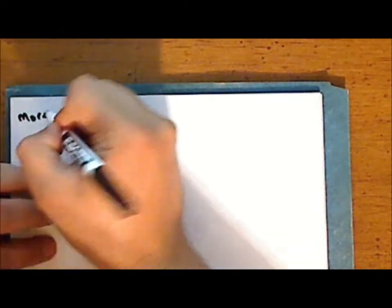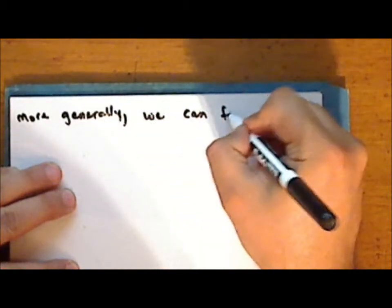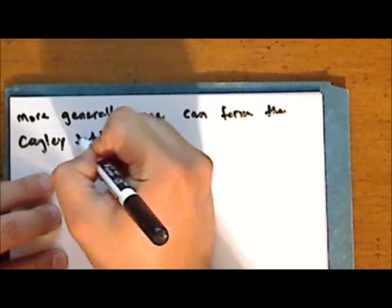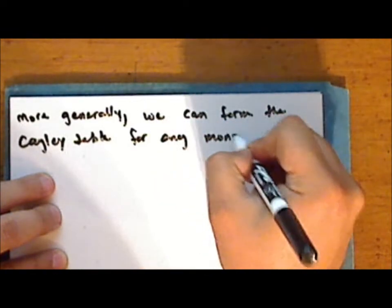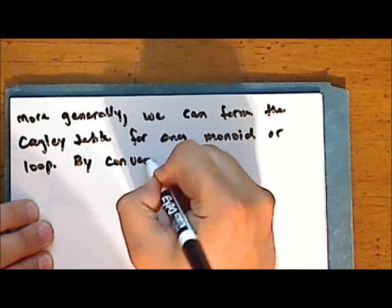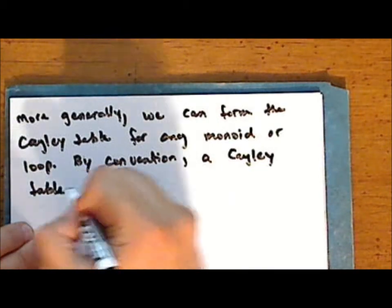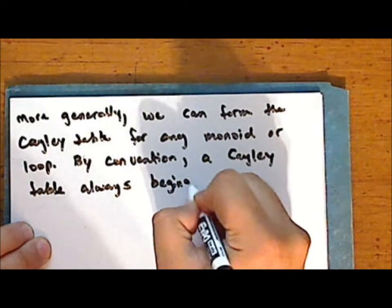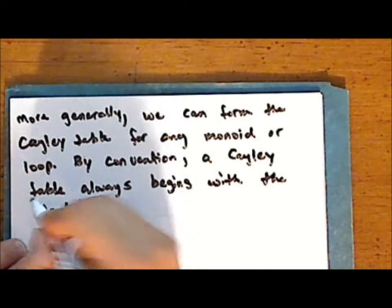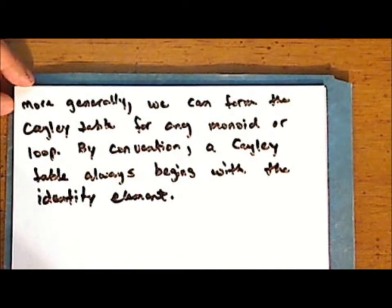More generally, we can form the Cayley table for any monoid or loop, and by convention the Cayley table always begins with the identity element. The Cayley table is named in honor of the British mathematician Arthur Cayley.